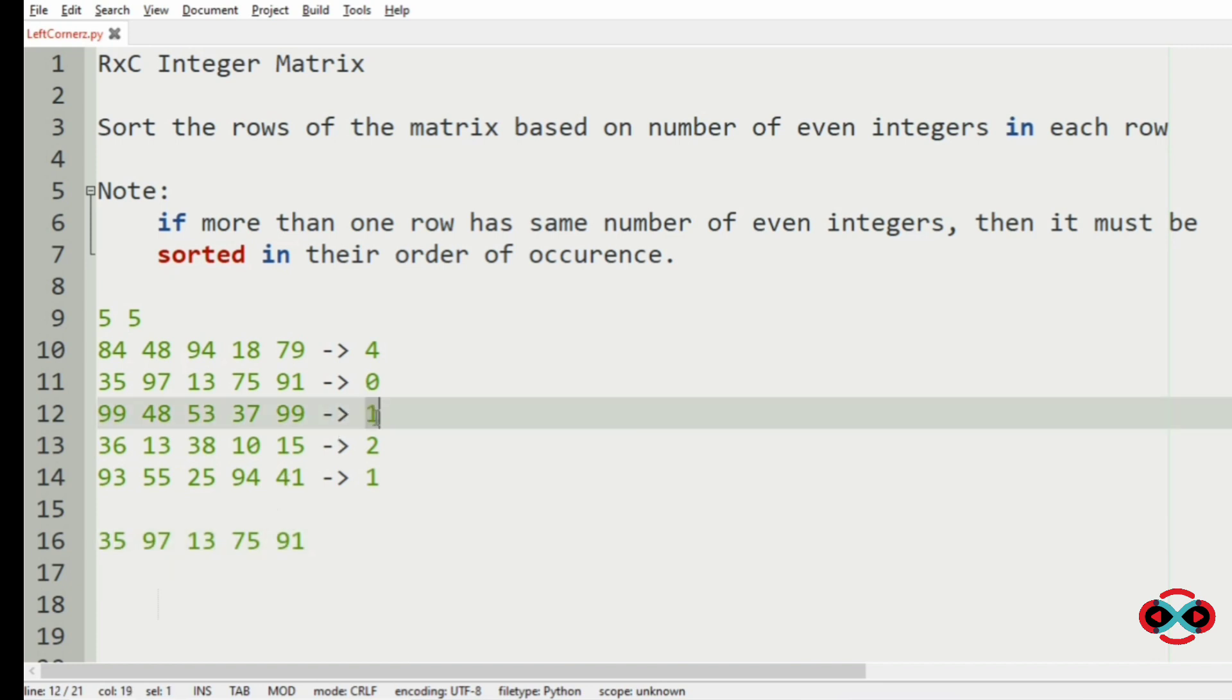Then after that, we have 1 occurring 2 times. So we are going to sort them in their order of occurrence. So first we will have this row, then this row. After 1, we have 2. After 2, so it will be our fourth row. Now after 2, it is 4. So this will be our last row.